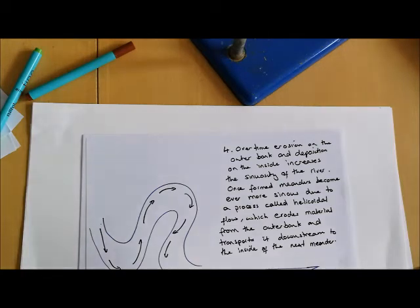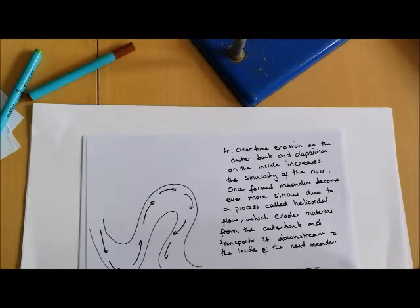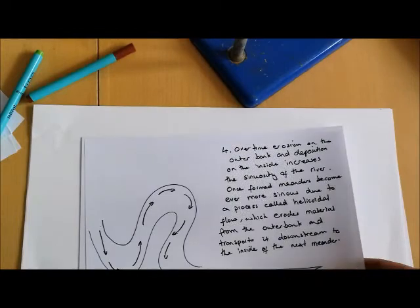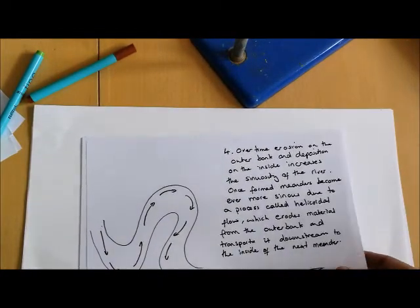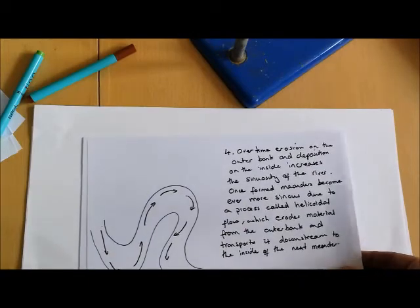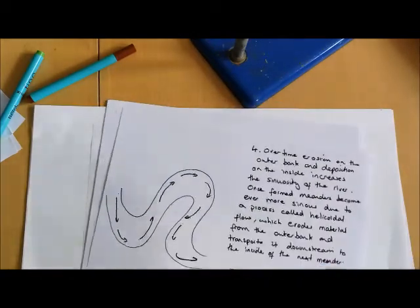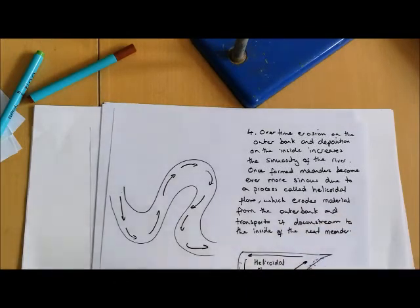Over time, erosion on the outer bank and deposition on the inside increases the sinuosity of the river. Sinuosity is basically the ratio of the river's length to its distance in a straight line from source to mouth, and then actually how long it accrues because of the fact that it bends. The tighter the bends, the more bends there are, the higher the sinuosity.